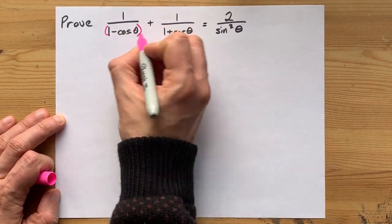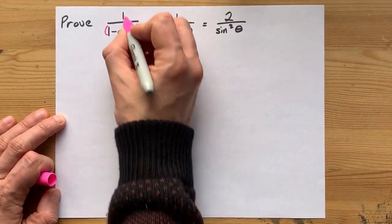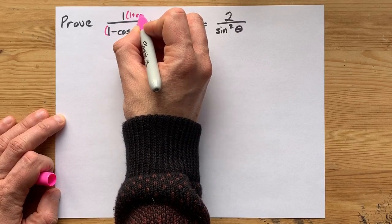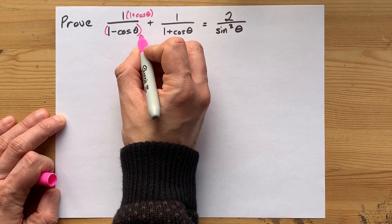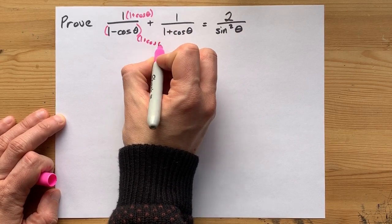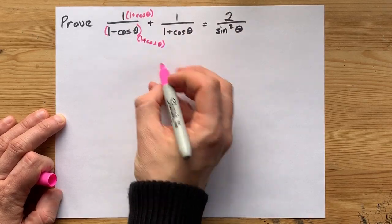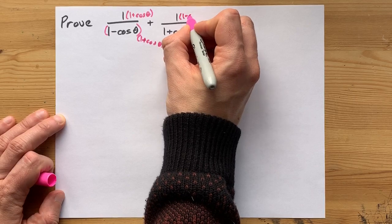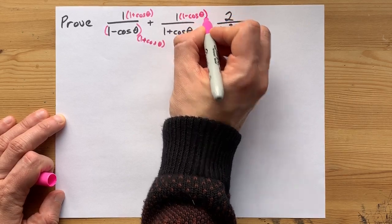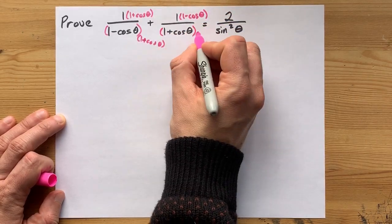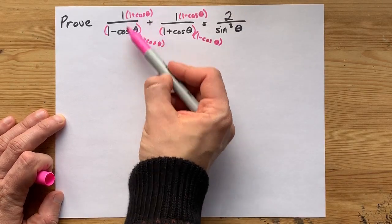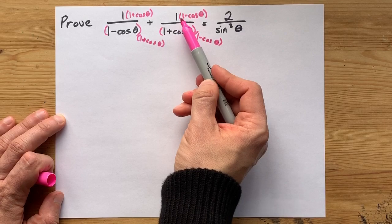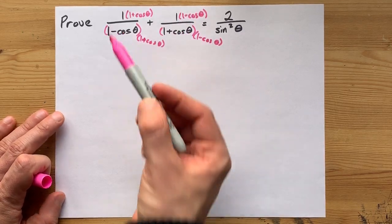What I mean is, we're going to have to multiply the top and bottom of this fraction by the full 1 plus cos theta that is the bottom of that fraction. And likewise, we're going to have to multiply the top and bottom of this second fraction by 1 minus cos theta. See, we're multiplying the top and bottom of this by that, and the top and bottom of this by that.